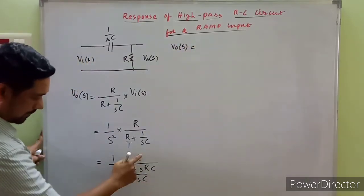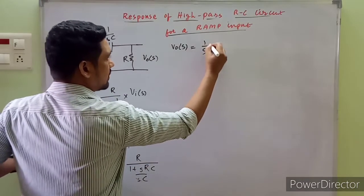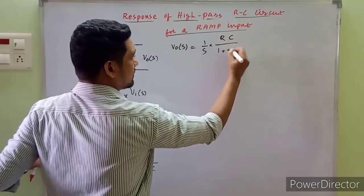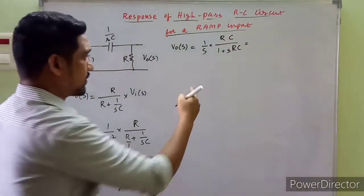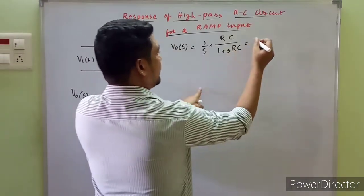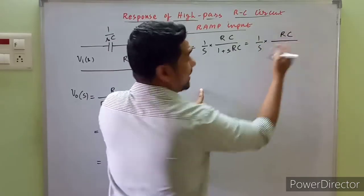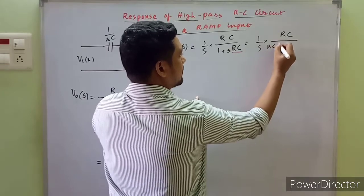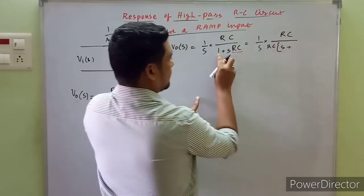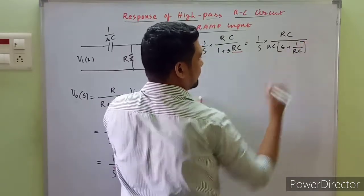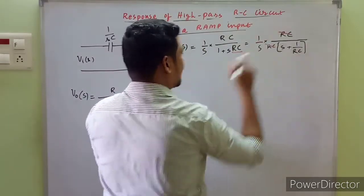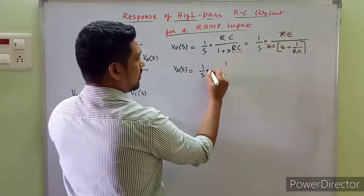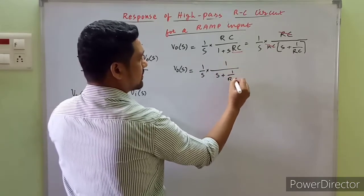Continuing the simplification, v_naught(s) becomes 1/s into RC upon (1 + sRC). Taking RC as common from the denominator expression leaves s plus 1/RC. The RC terms cancel, and finally v_naught(s) equals 1 divided by s times (s + 1/RC).